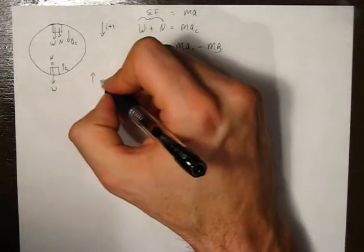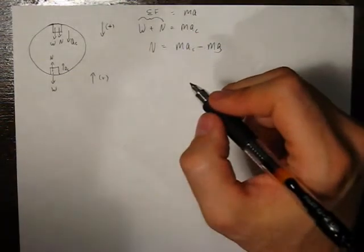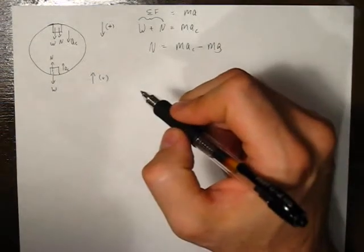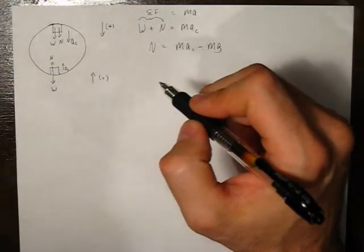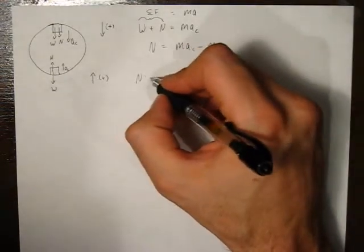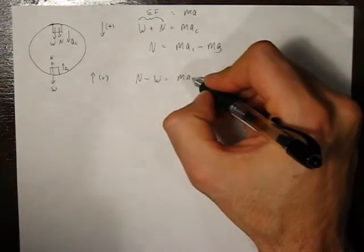we're now going to use upward as the positive direction to correspond with the direction of the acceleration. In this case, we've got the normal force upward minus the weight equals m a c.